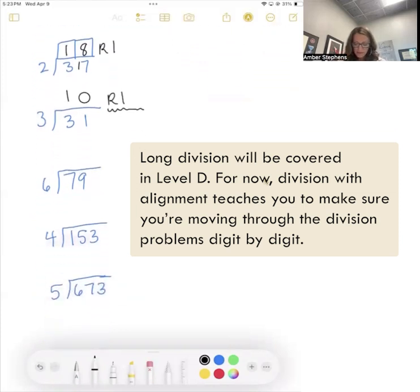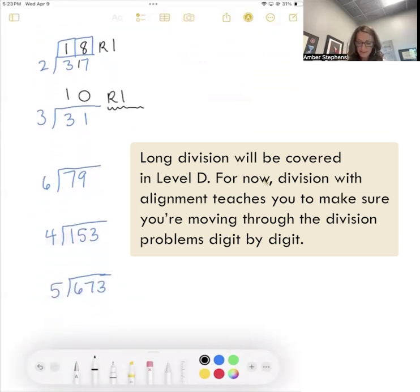Next one, 79 divided by 6. My 7 divided by 6 is 1 remainder 1. 19 divided by 6 is going to be 3 remainder 1. And I could actually do a better job at hanging that off the edge. Oops. Oh gosh. My numbers are disappearing.